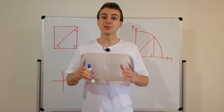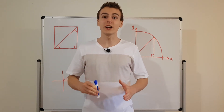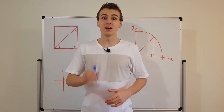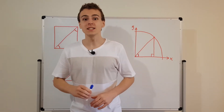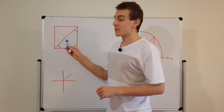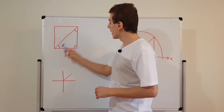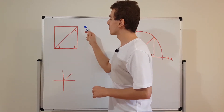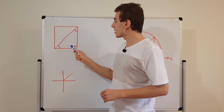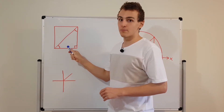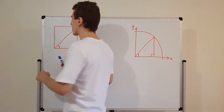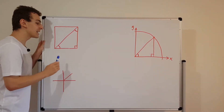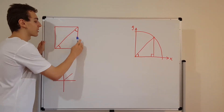Let's investigate an isosceles right triangle that lives in the unit circle. First, let's have a look at this square. This square can actually be cut in half if we draw a line along the diagonal. We can actually make this square into two triangles, and those triangles are very special triangles. They are isosceles triangles and they are right-angled triangles.